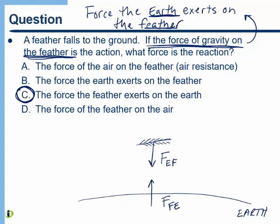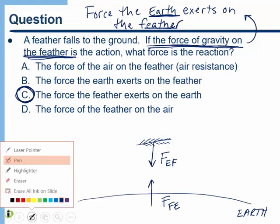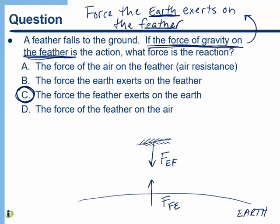Now let's look at some of the other forces present in this problem. There definitely is a force of air resistance on the feather — it's just not part of the action-reaction pair. Air resistance is simply the force the air exerts on the feather; I'll label that A_F for air on feather. The reaction force to that is the force that the feather exerts on the air. So those two are an action-reaction pair as well.